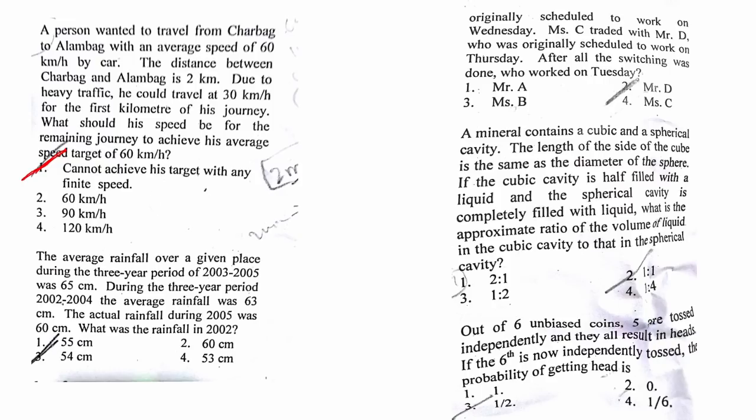The average rainfall question—the answer is option number 3. In this question about originally scheduled to work, the answer is Mr. D. Some of you might have got confused between Mr. and Mrs. C, so according to me the answer is Mr. D, but it might be wrong as well.